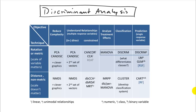Looking at our overall toolbox to see where we are in terms of objectives and techniques: canonical discriminant analysis can be used in exactly the same way as principal component analysis for complexity reduction. It's simply another rotation that you can apply to your data with a slightly different objective.